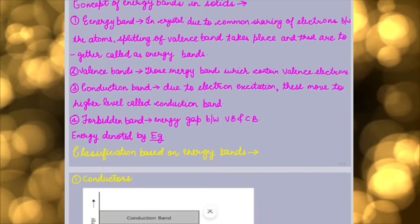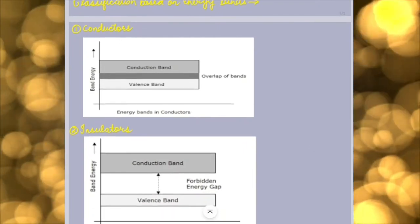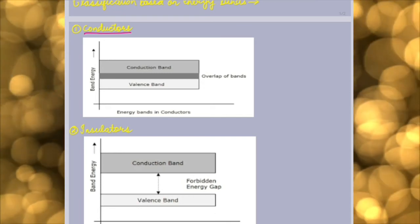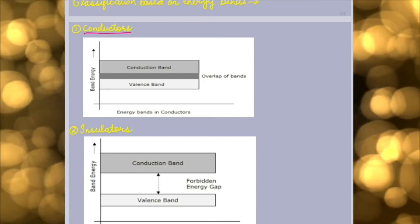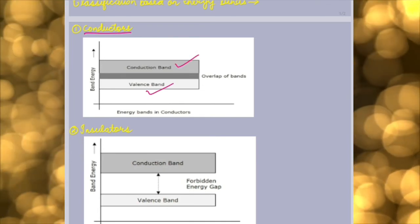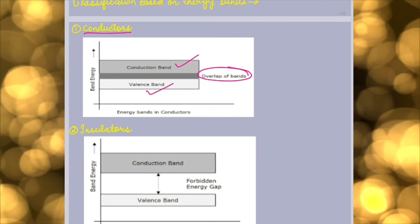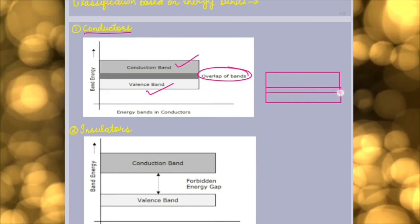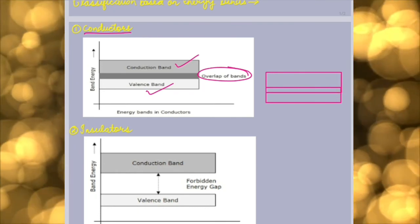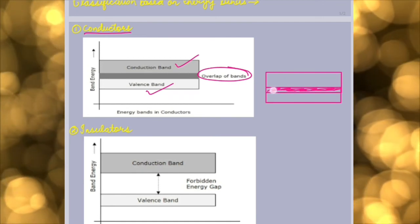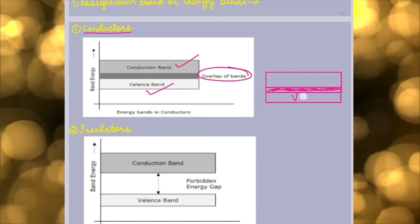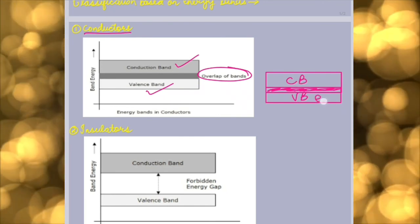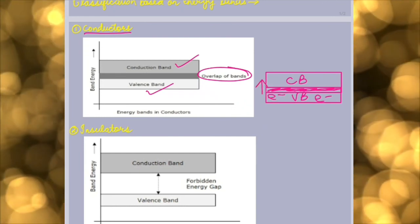Now let's talk about the classification which is based on the energy bands. On the basis of energy band, we have three types of classification. First classification is conductors. Now what are conductor classification? Here you can see that the valence band and conduction band, these are overlapping. So this is my valence band and this is my conduction band. We can see that the overlapping is there, so the electrons which are present in the valence band can easily come into the conduction band.